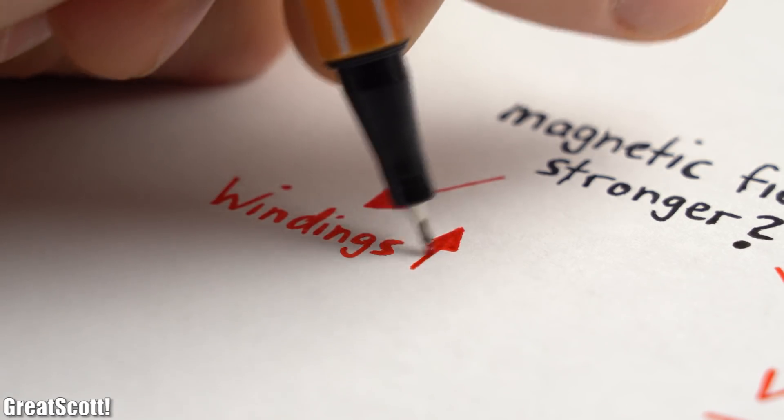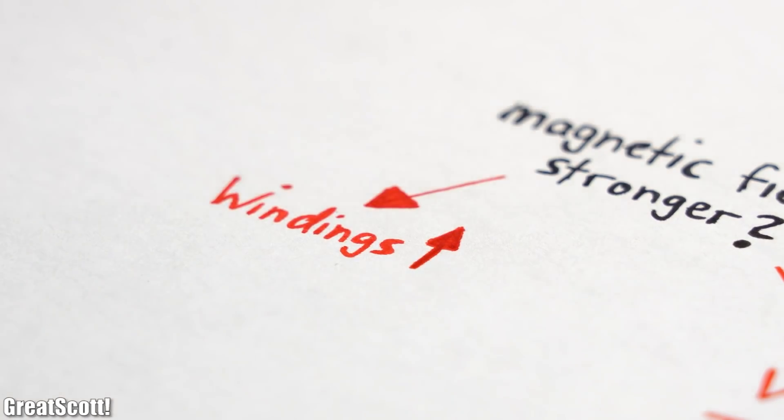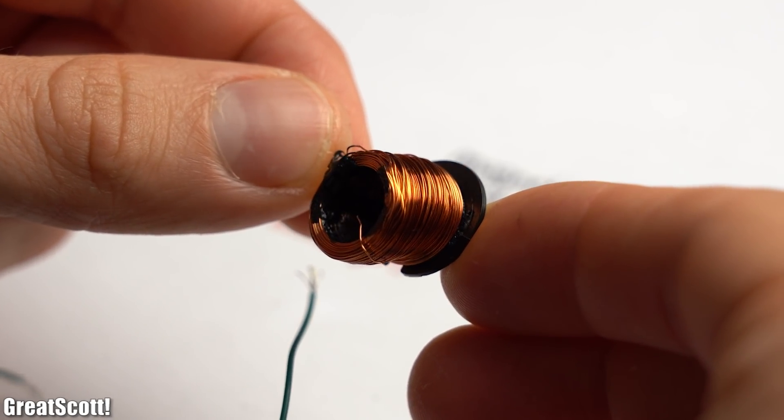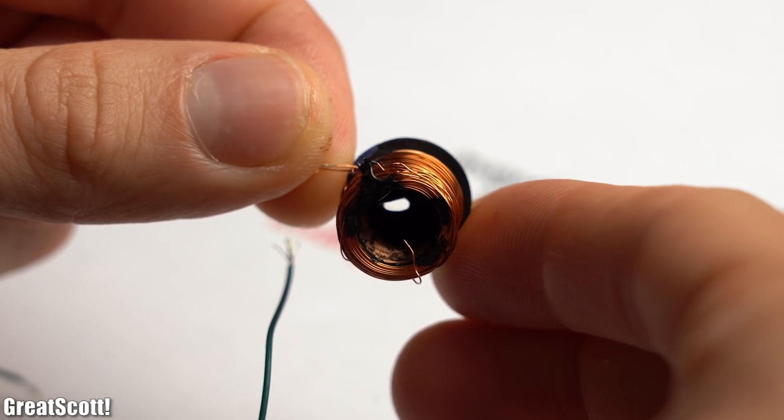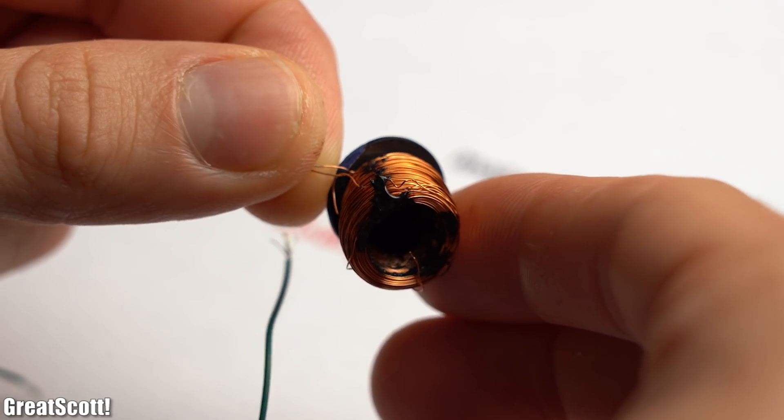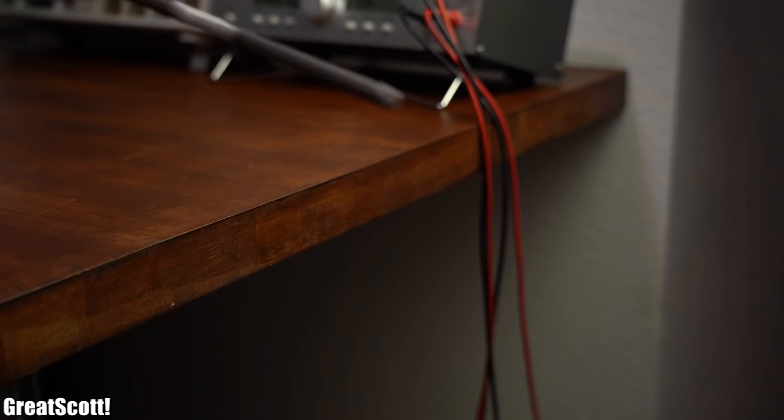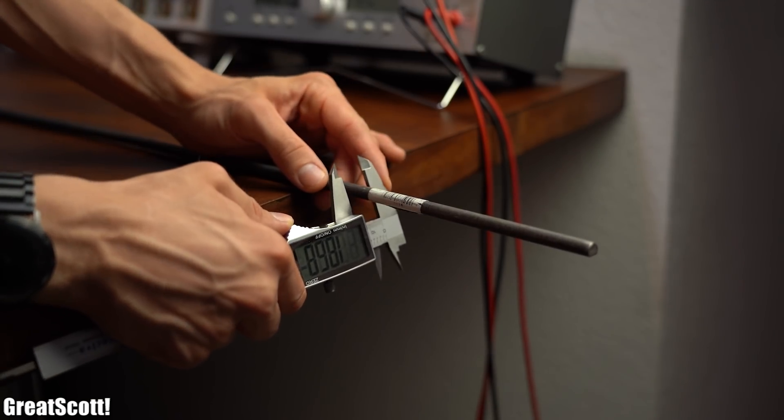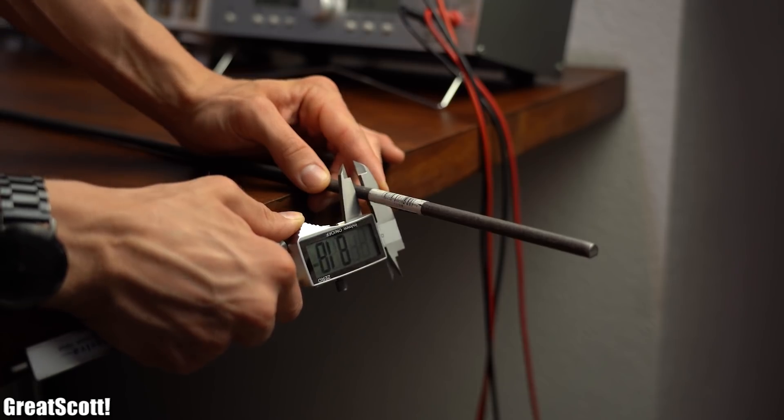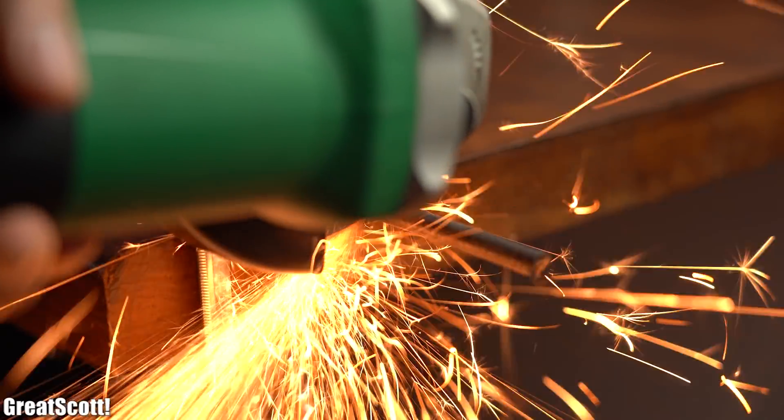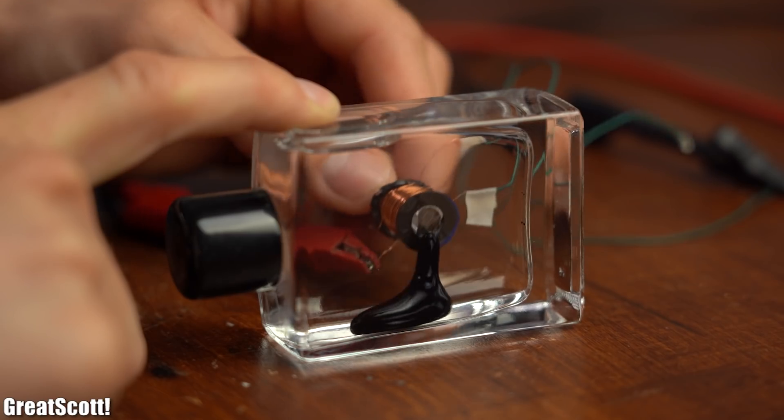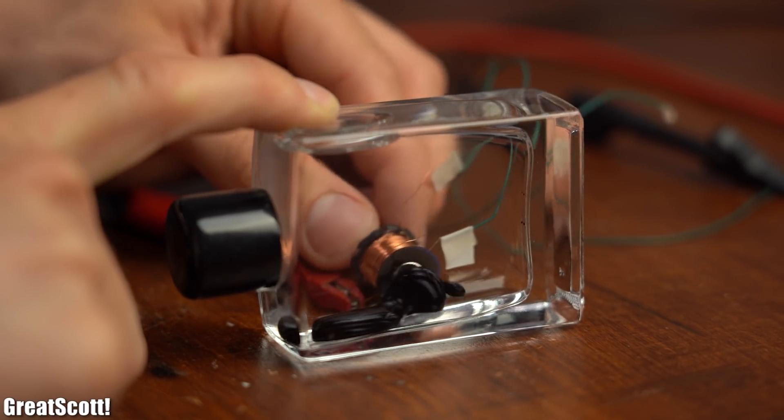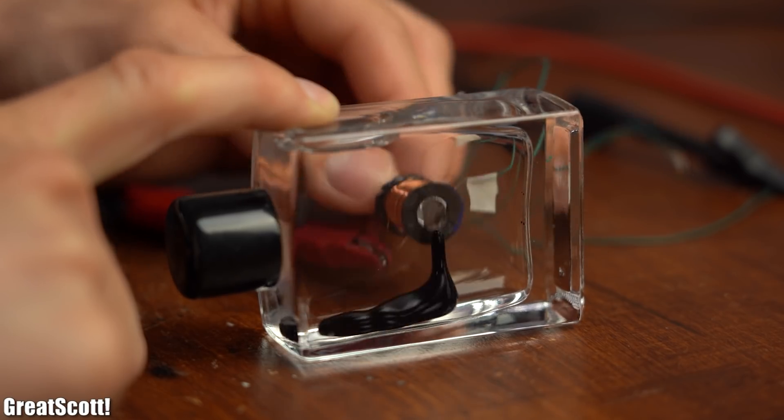So instead we have to add more windings to the coil which sadly was once again not possible with the commercial magnet because the 1.5cm long coil was already packed full. To solve that problem I firstly brought in my own 8mm thick ferromagnetic iron core from which I cut a small piece for testing. As you can see it performs perfectly fine with the commercial coil which means we can use it for my DIY electromagnets.